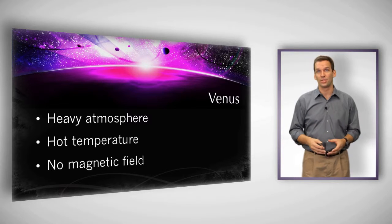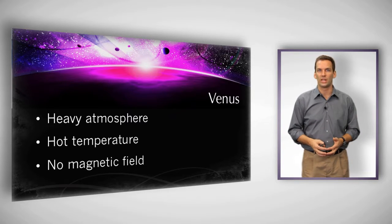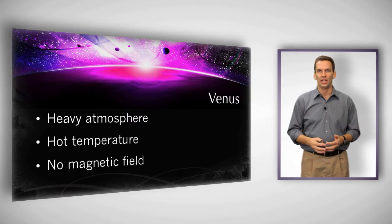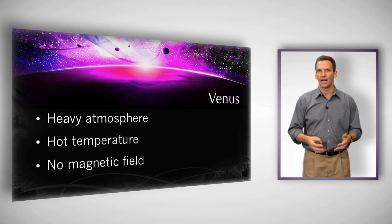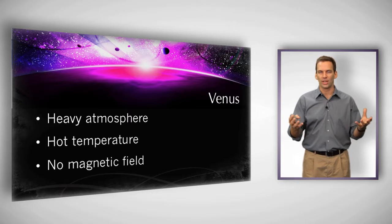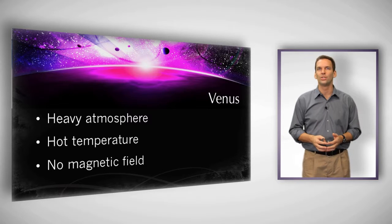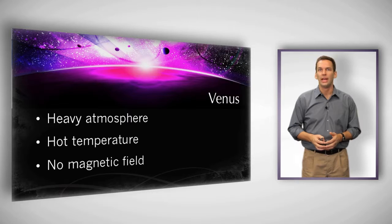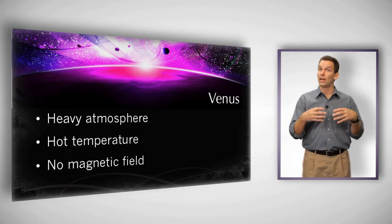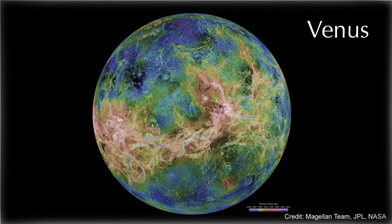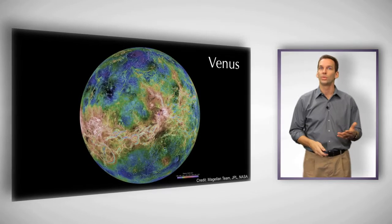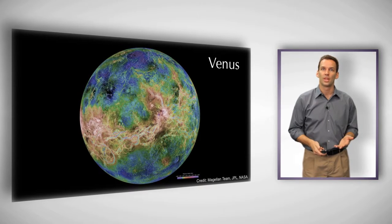When we look at Venus, we find that it has a very heavy atmosphere, 40 times that of Earth, and a hot temperature right around 800 degrees Fahrenheit, contrasted with roughly 30 to 100 degrees Fahrenheit on Earth. It has no magnetic field, so what has happened is that the radiation and the wind from the sun has actually evaporated and destroyed all of the water that was originally on Venus.